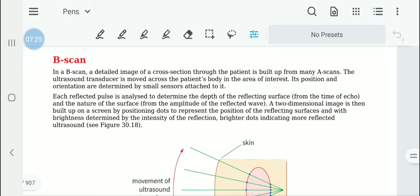What happens is each reflected pulse is going to determine at what depth it is going to be. This depth is going to be reflected on a surface.